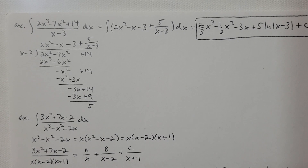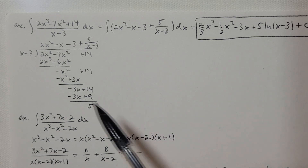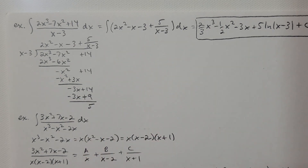We're in section 7-4, and we're talking about partial fractions. I'm going to show you some examples now. In this first example, suppose that we want to integrate 2x cubed minus 7x squared plus 14 divided by x minus 3.